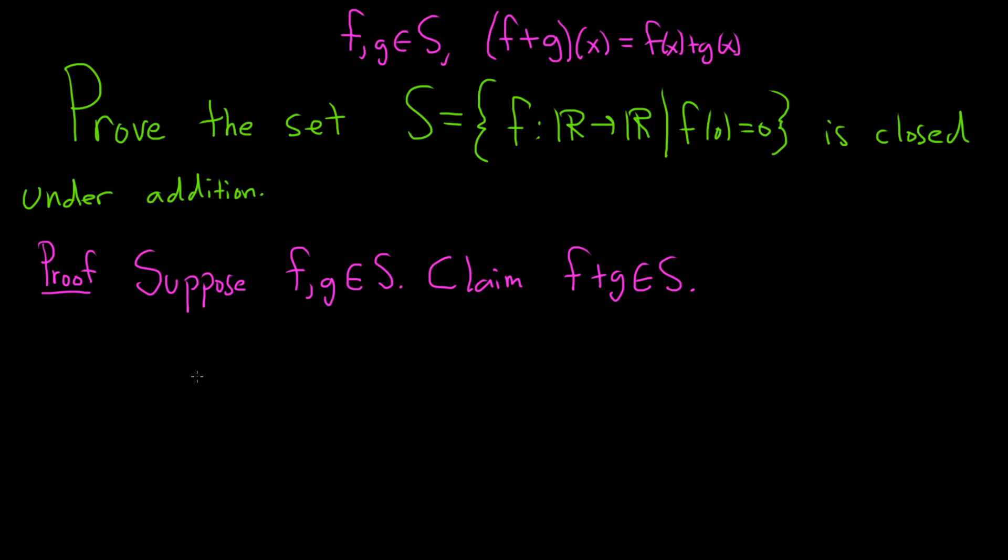So now we just have to show that f plus g of 0 is equal to 0. Notice how I wrote this outside of the proof. This is what we have to show: f plus g of 0 is equal to 0. That's what it means for f plus g to be in this set.